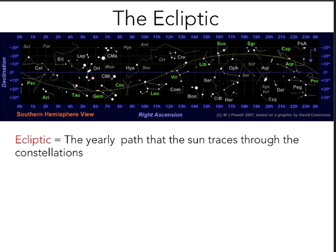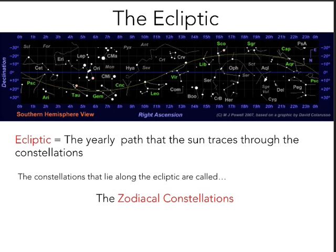If you look at the constellations labeled along the ecliptic, you might recognize them as the signs of the zodiac. From left to right they go: Pisces, Aries, Taurus, Gemini, Cancer, Leo, Virgo, Libra, Scorpio, Sagittarius, Capricorn, Aquarius, and back to Pisces. These are what we call the zodiacal constellations. As you learned in the first lab, your zodiac sign is the location of the Sun relative to the background stars on the day that you were born.